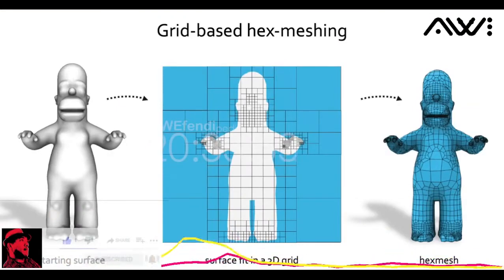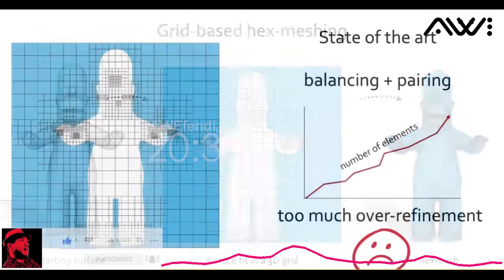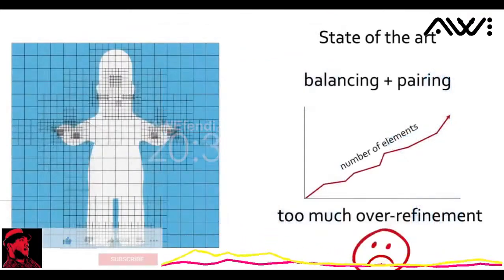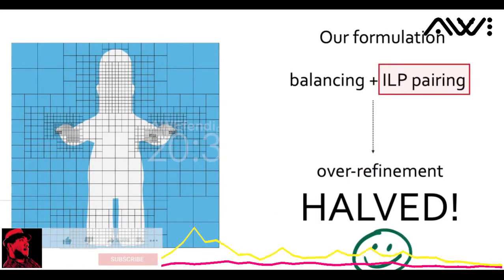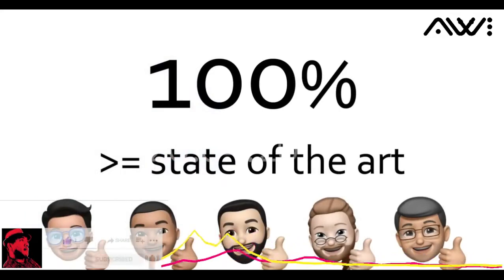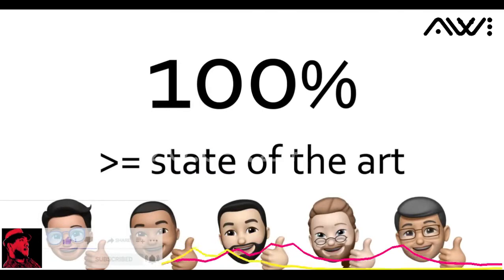We present an algorithm to turn an adaptive grid into a conformal hexahedral mesh. State-of-the-art algorithms use Octree properties to guarantee hex meshability, but at the cost of an excessive over-refinement. We introduce a novel ILP approach that reduces the over-refinement required to make the grid hex meshable by exploring a wider solution space. We always perform better or equal than the previous approaches in terms of element number. If you are interested in our work, please come to our presentation.